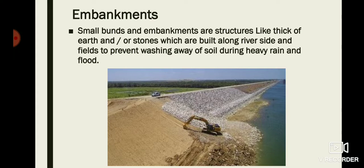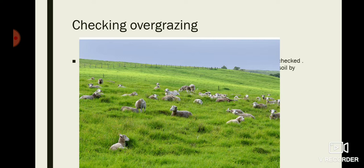Embankments are made of earth, stones, or concrete and are placed near the bank of a river to prevent washing away of soil during heavy rain and flooding. These also prevent the surrounding areas from flood damage.